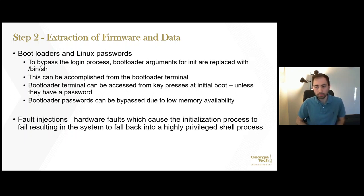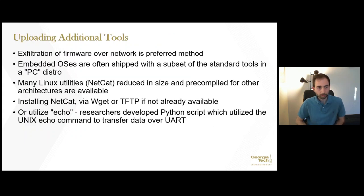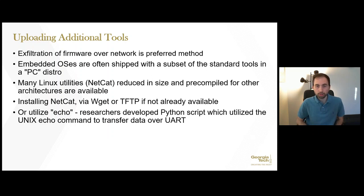The example the researchers describe includes shorting the ground and the master-in-slave-out pins of the SPI flash module, causing any reads of the device to be malformed. Extraction of firmware over the network is the preferred method. However, embedded operating systems are often shipped with a subset of standard tools. Tools such as Netcat aren't typically needed for an IoT device, but many utilities like Netcat have reduced-size versions pre-compiled for other architectures and freely available on the internet. Using this along with WGET or the Trivial File Transfer Protocol, TFTP, the researchers were able to install these custom versions of Netcat onto the device.